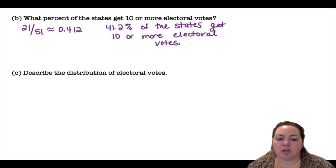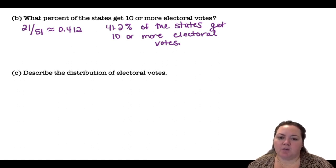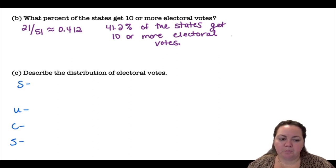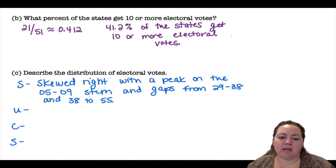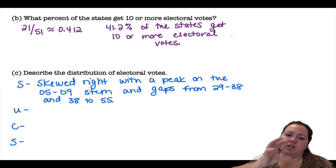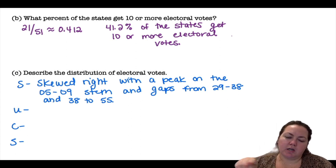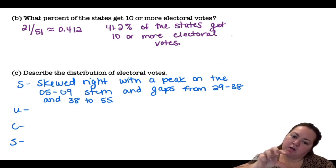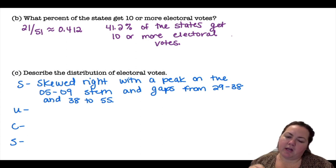Describe the distribution of electoral votes. Remember, if you're describing the distribution we use the acronym SUCKS: shape, unusual feature, center, spread. The shape is skewed to the right. When looking at a stem and leaf plot, you want to imagine turning it so that the numbers increase from left to right to see what the shape would look like.